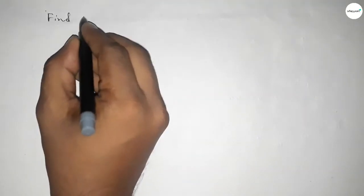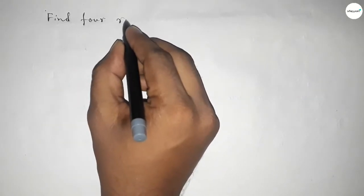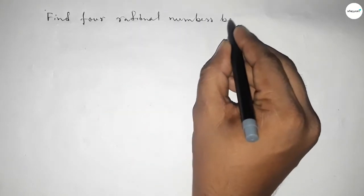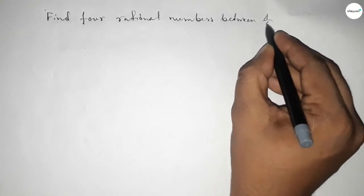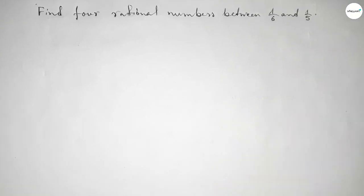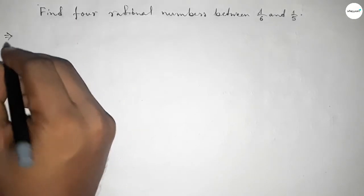Hi everyone, welcome to Assessor Classes. Today in this video we have to find four rational numbers between 1 over 6 and 1 over 5. So finding four rational numbers, let's start. First of all, write down here the given numbers.